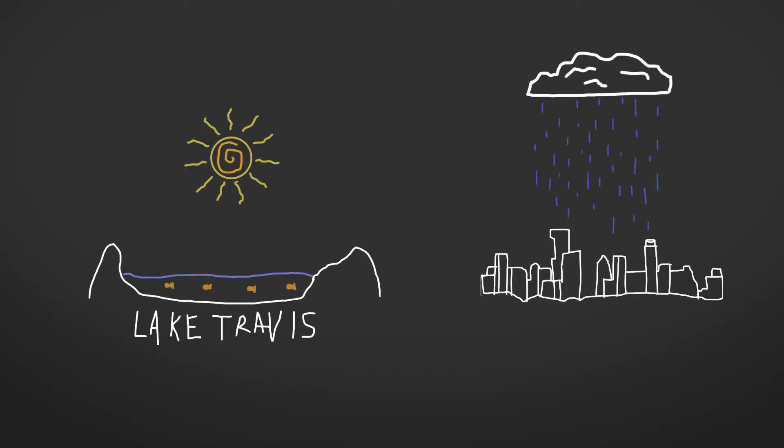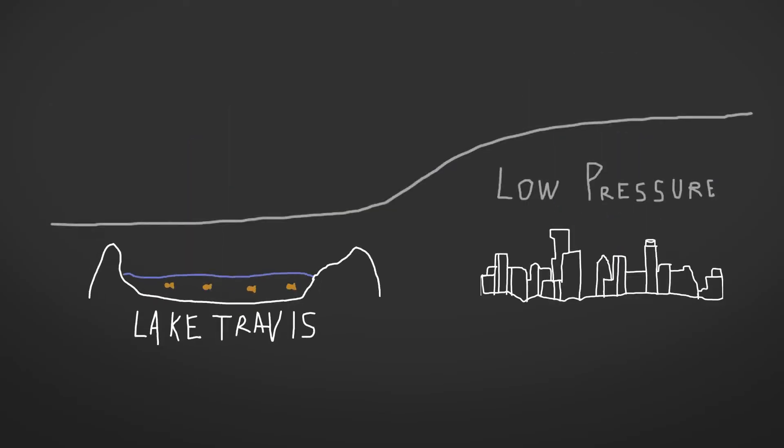So let's take a look at a small-scale example of all this. Let's say we have a storm in downtown Austin but the Sun is shining out over Lake Travis. This means there's a little low pressure system over the city and there's a high pressure system over the lake.